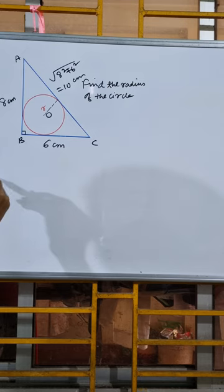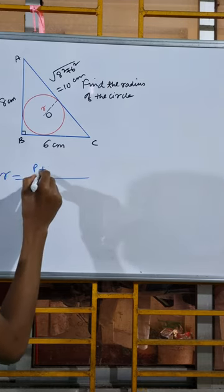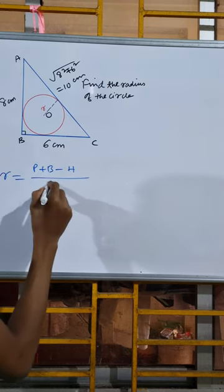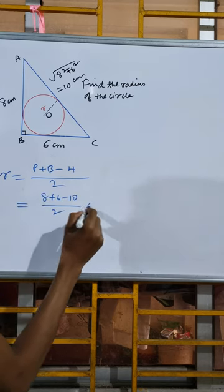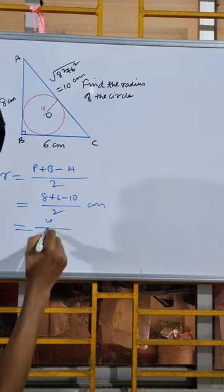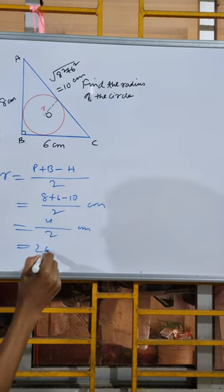There are actually two ways to do so. First we write that radius equals perpendicular plus base minus hypotenuse by 2, where perpendicular is 8 plus 6 minus 10 by 2 cm. So this will give us 4 by 2 cm, so this will be 2 cm.